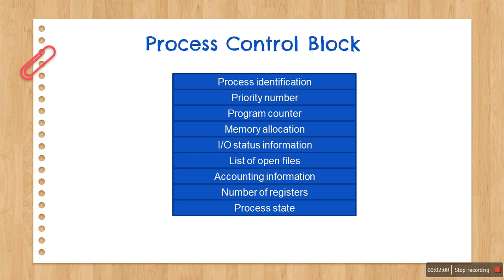PCB is identified by an integer called process ID. When a process is running, its hardware state is inside the CPU. When the OS stops running a process, it saves the register values in the PCB. When a process is created by the operating system, it allocates a PCB for it.